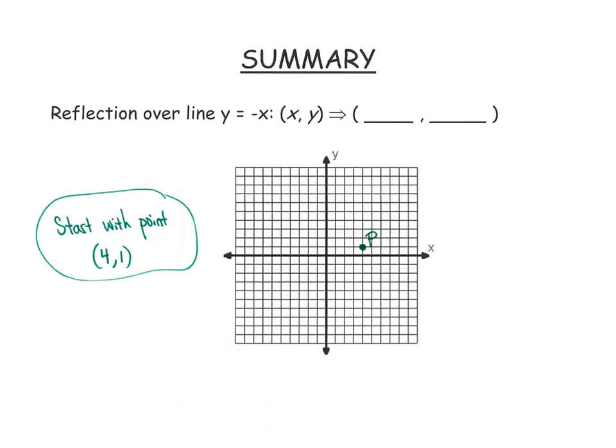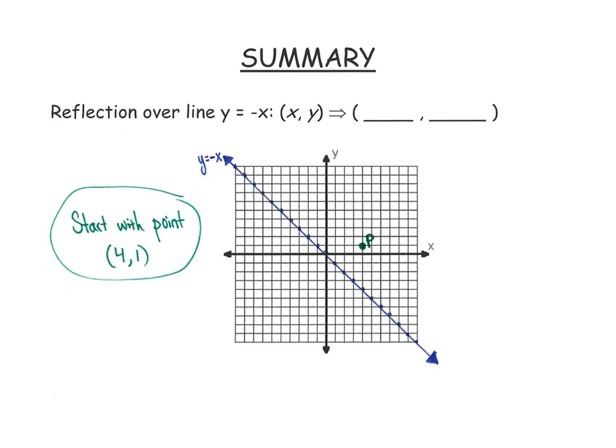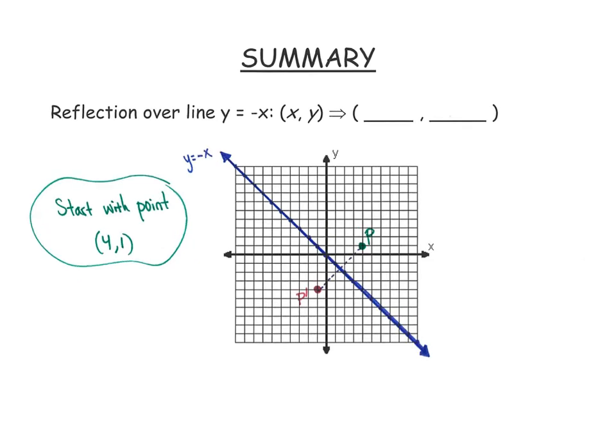Our last rule that we talked about in this section is looking at where p goes from the line y equals negative x. If you just draw a quick sketch of that, draw a perpendicular line segment, and just see where p prime would go. It looks like p prime goes to negative 1 comma negative 4. Let's think about what this rule is. I'm starting with 4, 1, and I'm switching x and y, and I'm taking the opposite of them.